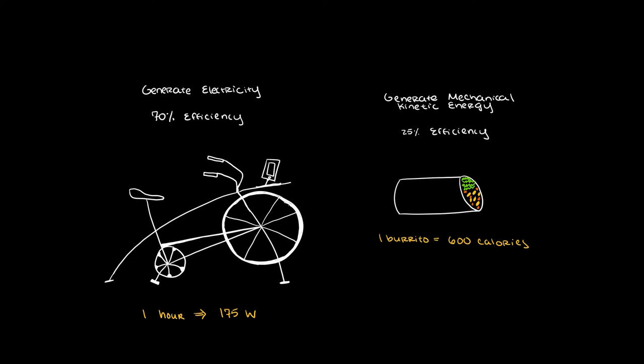As an example, say you want to charge your phone. You know that if you pedal the bike, you can generate electricity with about 70% efficiency. Also, you know that the human body is 25% efficient in converting chemical energy from the food you eat into mechanical kinetic energy.